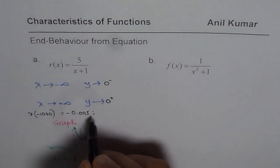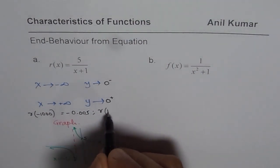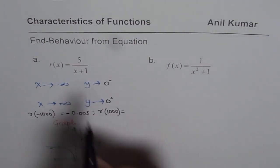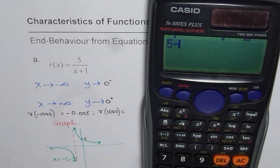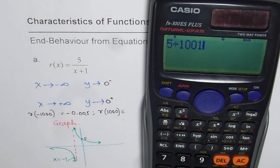Similarly, you could also calculate what is the value of the function for plus 1,000. So if I write plus 1,000 here, then I get 5 divided by 1,001, right? So that is 1,000 plus 1.